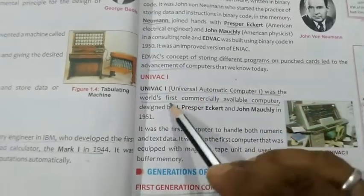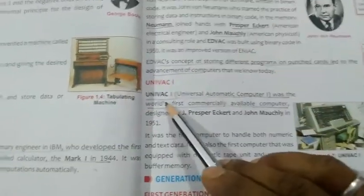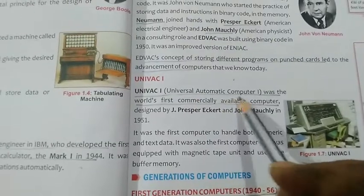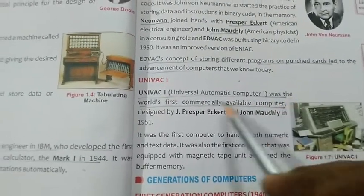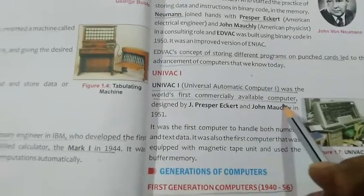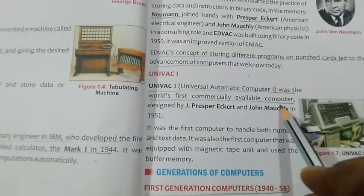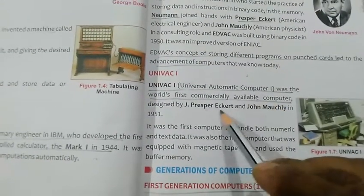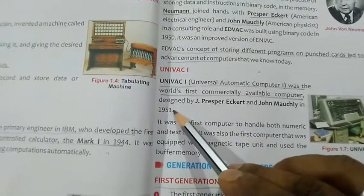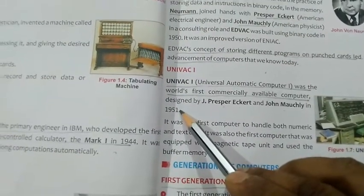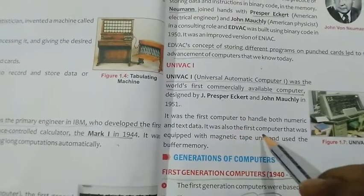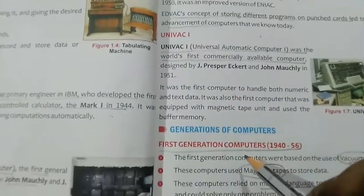Next, the important machine is UNIVAC 1 — Universal Automatic Computer 1. It was the first commercially available computer, meaning common people could afford it, designed by John Mauchly and John Presper Eckert in 1951. This machine is much easier to handle and data can be stored in it.